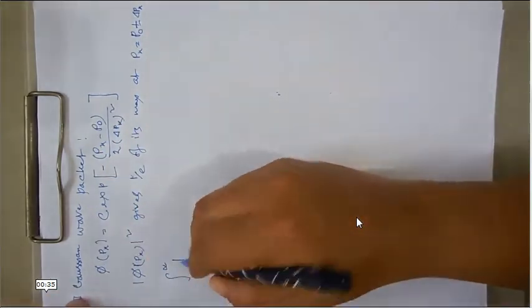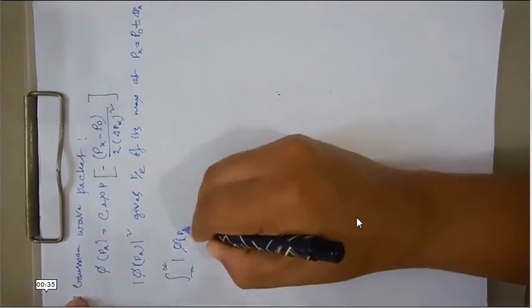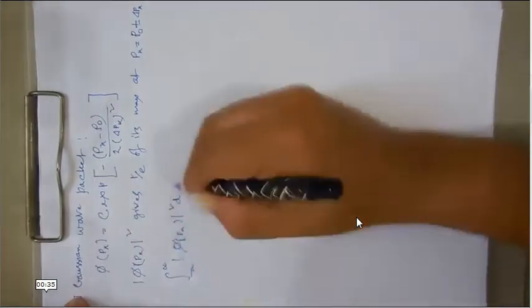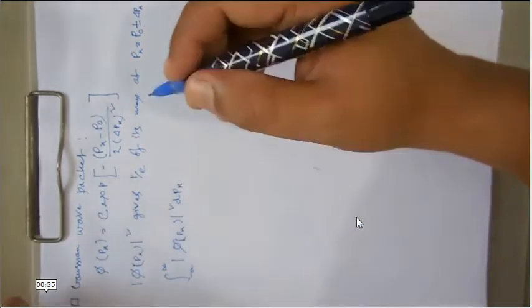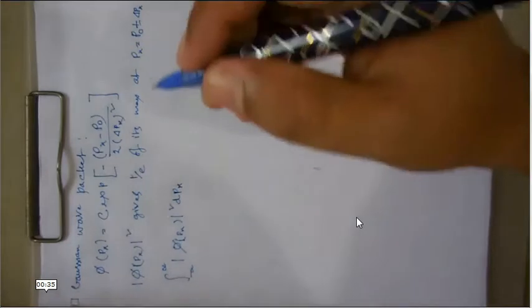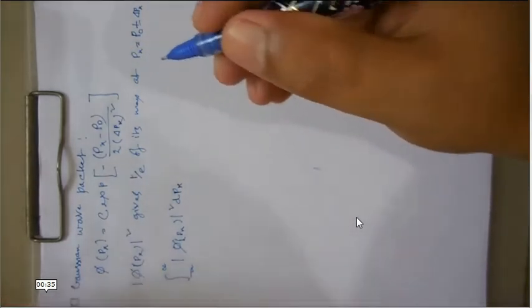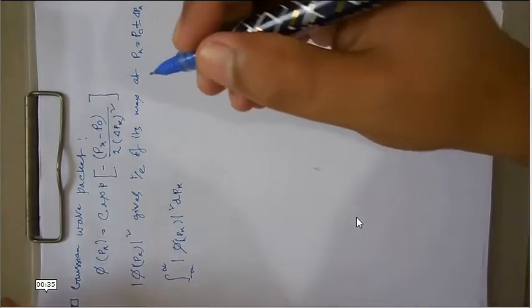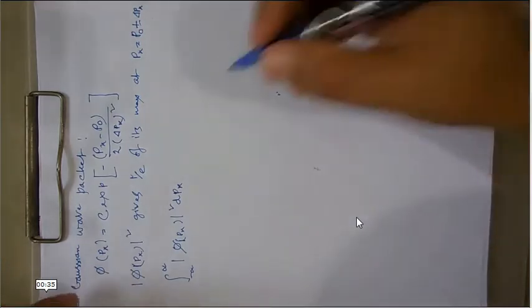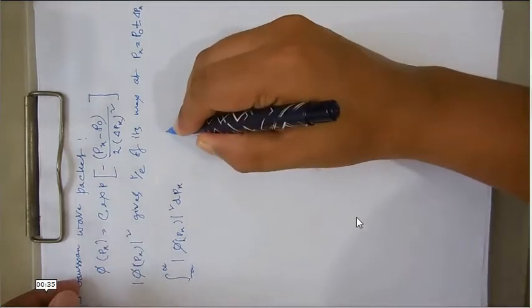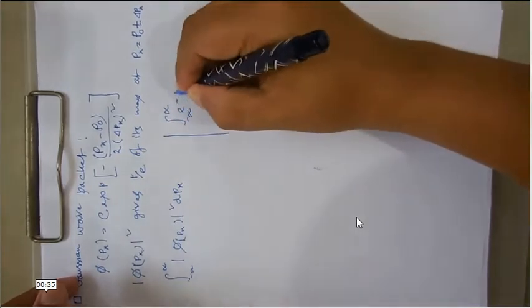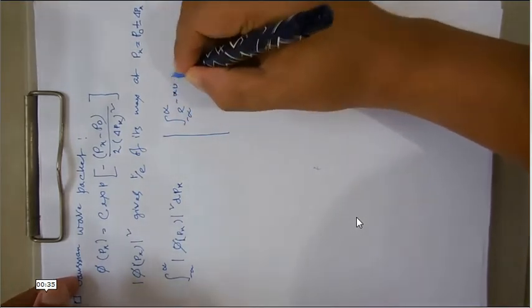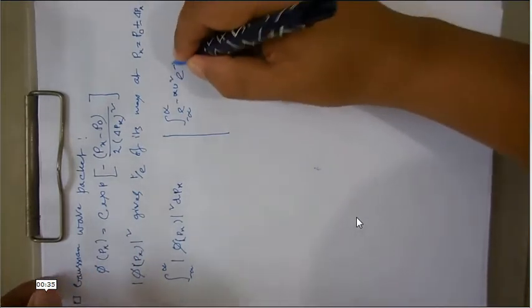I will do that. phi x squared, this is delta px. So for that I need the help of one equation. Suppose I am writing here. Maybe you know it in doing the thermal physics. Several times we have used this type of equation.